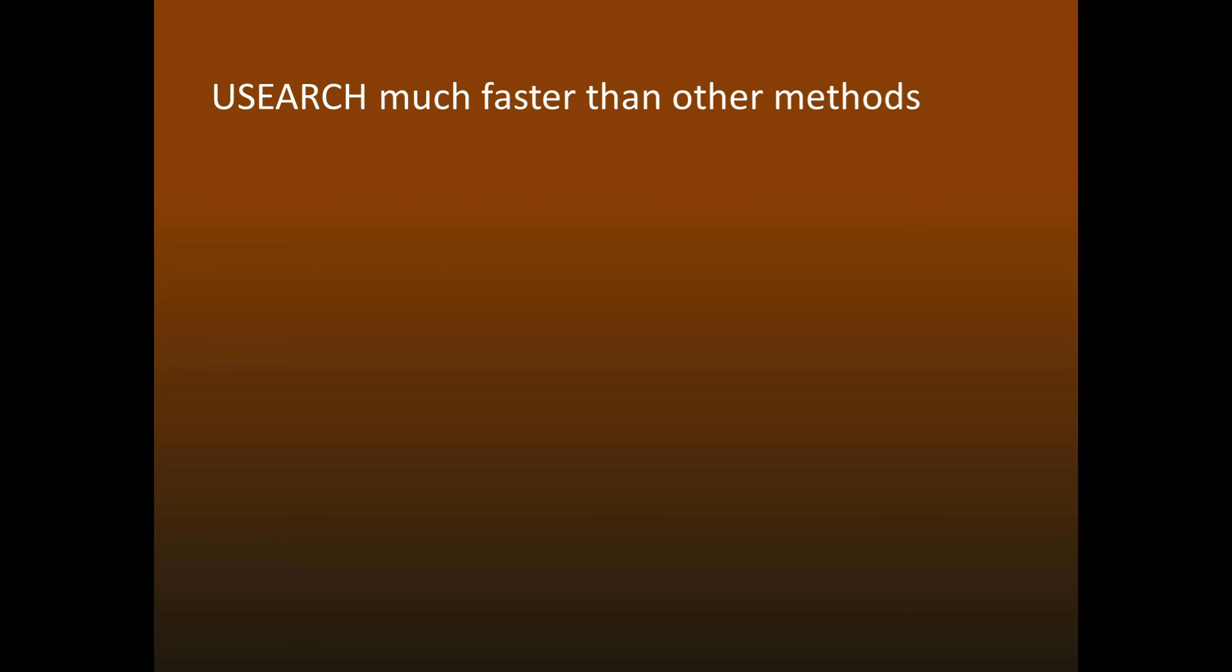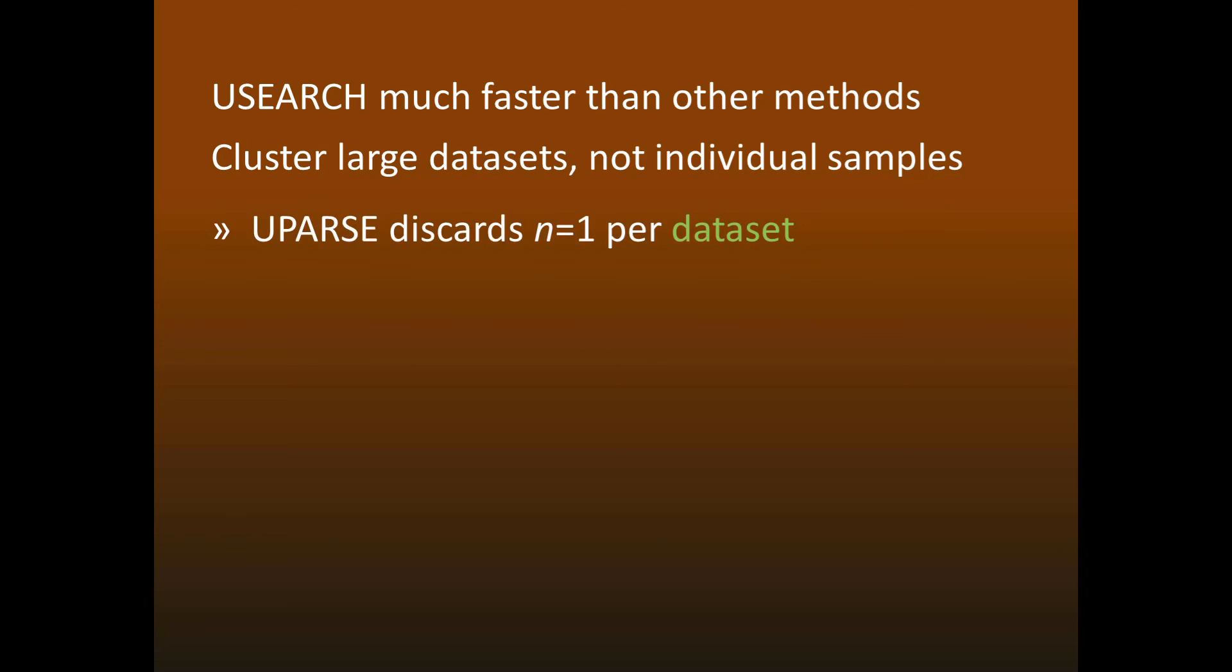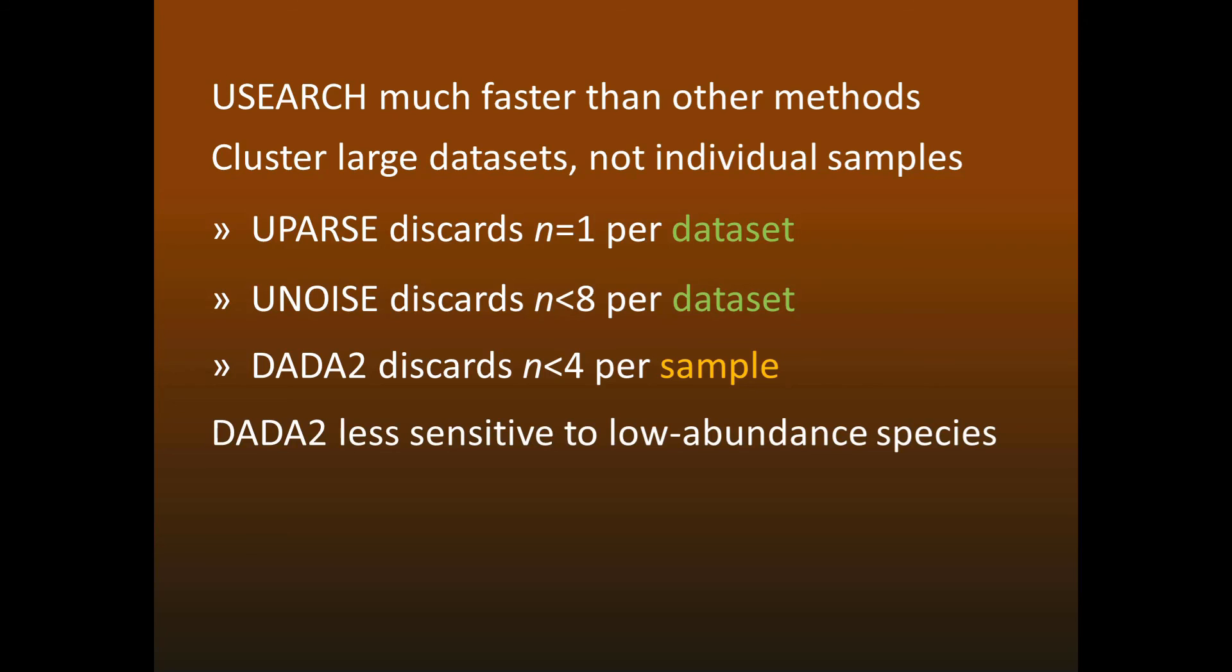uSearch has much better scaling and is much faster than other methods. This gives you the ability to combine all reads from a dataset and cluster them together. Sequence abundances are determined across the entire dataset rather than individual samples. UPARSE discards singletons per dataset and UNOISE discards sequences with abundances less than 8 per dataset, while DADA2 discards sequences with abundances less than 4 per sample. This means that in most cases DADA2 is much less sensitive to low-abundance species.